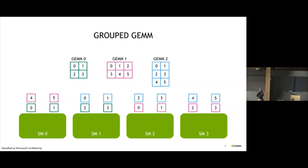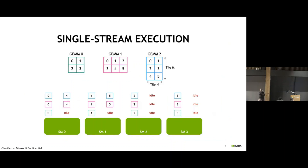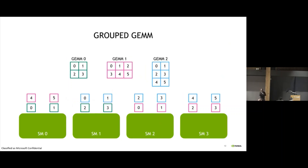So what do we do? We can basically group them differently. We take the first GeMM, gem 0, take the tiles and start assigning different SMs — tiles 0, 1, 2, 3 from GeMM 0. Then we go to GeMM 1 and distribute it, filling all the SMs. Then we go to the third problem and put another one on the timeline. Now we can do it in two steps without any idle SMs, compared to three steps before. This is the basic idea.